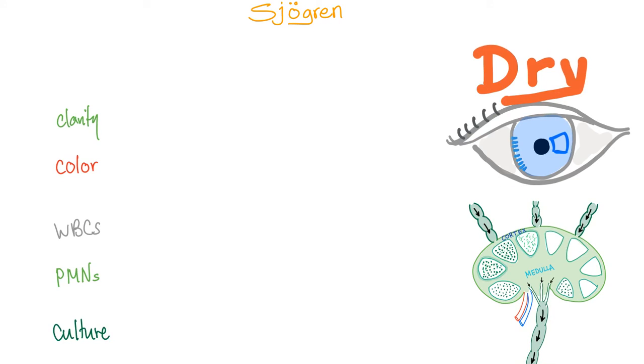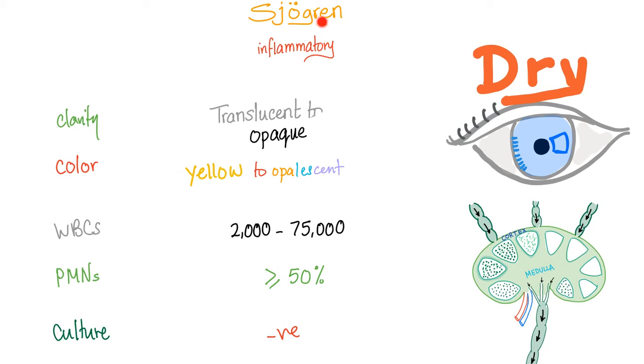Next, Sjogren syndrome, a triad of dry eyes, dry mouth, and inflammatory arthritis. You have an increased risk of lymphoma. What kind of lymphoma? Is it Hodgkin's or non-Hodgkin's? The answer is non-Hodgkin's. Which subtype of non-Hodgkin's? And the answer is marginal zone B-cell lymphoma, also known as maltoma. Watch my video on marginal zone lymphoma if you wish. Cool. Now pause. Here are the answers. Sjogren syndrome is an inflammatory arthritis, so treat it exactly the same as rheumatoid, lupus, gout, etc. Clarity, translucent to opaque, which is not normal because the normal is transparent. Color, yellow to opalescent, which is not normal because the normal is colorless. White blood cells, 2,000 to 75,000, which is not normal because the normal is less than 200. PMNs is abnormal. The normal is less than 25%. Cultures are negative.